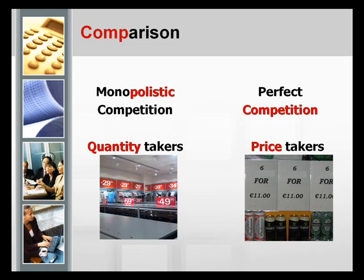While a firm under monopolistic competition has some control over the price it charges, the firm differentiates its products from those of others. However, this price-making power of a monopolistically competitive firm is rather small. An important consequence is that when such a firm reduces its price, it can attract customers away from other brands, and vice versa.